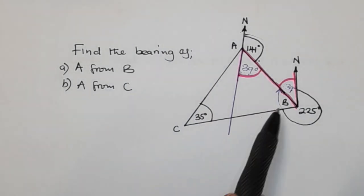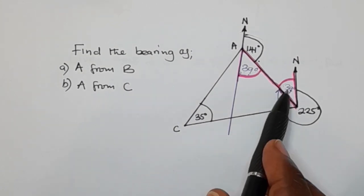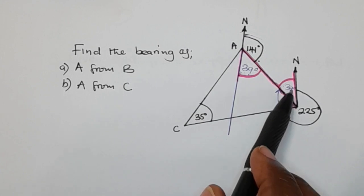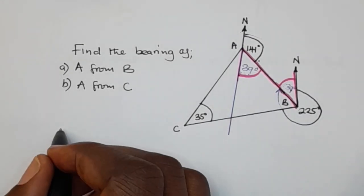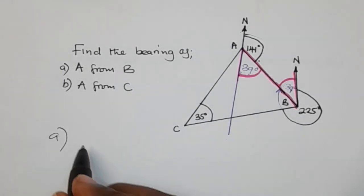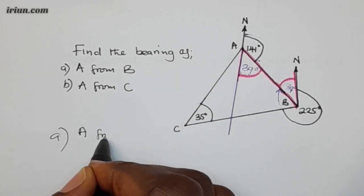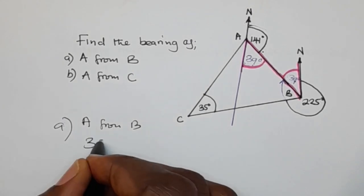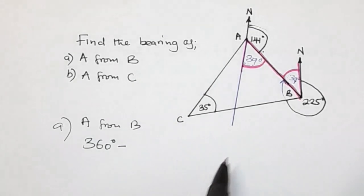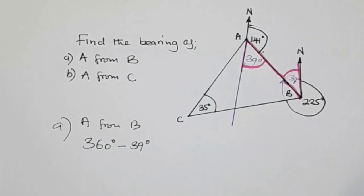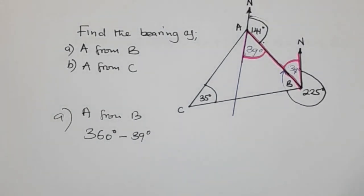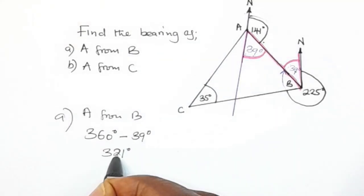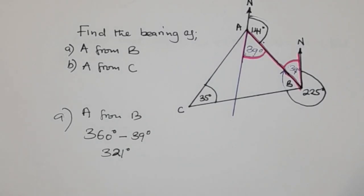So now that we know that, for us to find the bearing of A from B, we are going to say 360 degrees, which is the full revolution, minus 39 degrees. So this is Part A: the bearing of A from B will be 360 degrees minus 39 degrees, which gives 321 degrees.